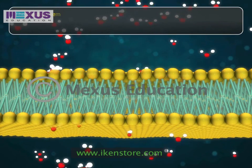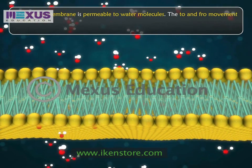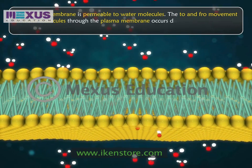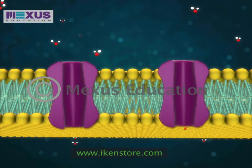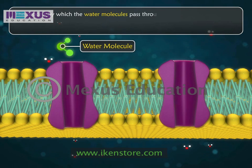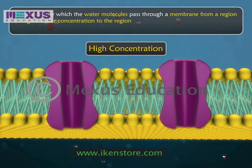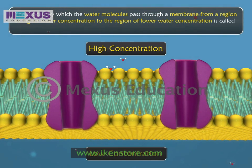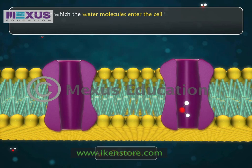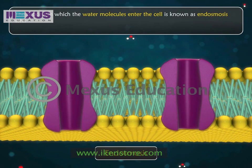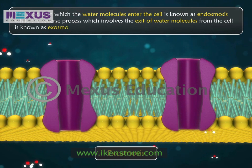The plasma membrane is permeable to water molecules. The to-and-fro movement of water molecules through the plasma membrane occurs due to differences in the concentration of solutes on either side. The process by which water molecules pass through a membrane from a region of higher water concentration to a region of lower water concentration is called osmosis. The process in which water molecules enter the cell is known as endosmosis, while the reverse process involving the exit of water molecules from the cell is known as exosmosis.